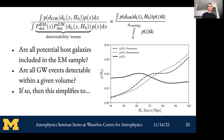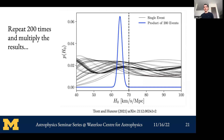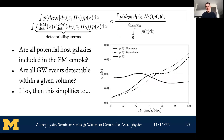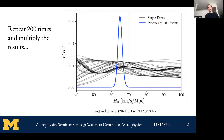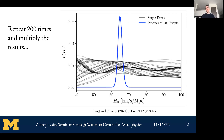We want to combine events — each of the 200 black curves represents one event posterior. Their product in blue is our combined result, which we'd like to recover our input value of 70. This works pretty well in some cases, but it starts to diverge as we change some important parameters. I need to admit I pulled a bait and switch here.